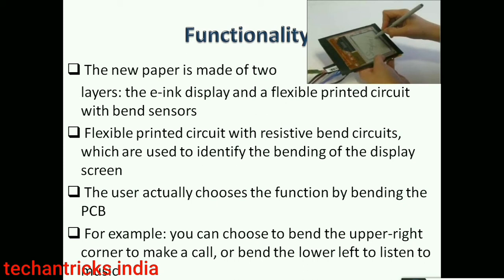A flexible printed circuit with a resistive bend circuit is used to identify the bending of the display screen. The user chooses functionality by bending the PCB — for example, bending the upper right corner to make calls, or bending the lower left corner to listen to music.